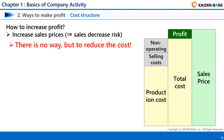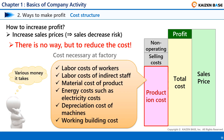Therefore, there is no choice but to reduce the cost. At a factory where there is manufacturing activity, it is necessary to lower the production cost. At the factory, the following money is spent: labor costs of workers, labor costs of indirect staff, material cost of product, energy costs such as electricity, depreciation cost of machines, and working building cost. How to reduce these costs is the objective of Kaizen activities in the factory.